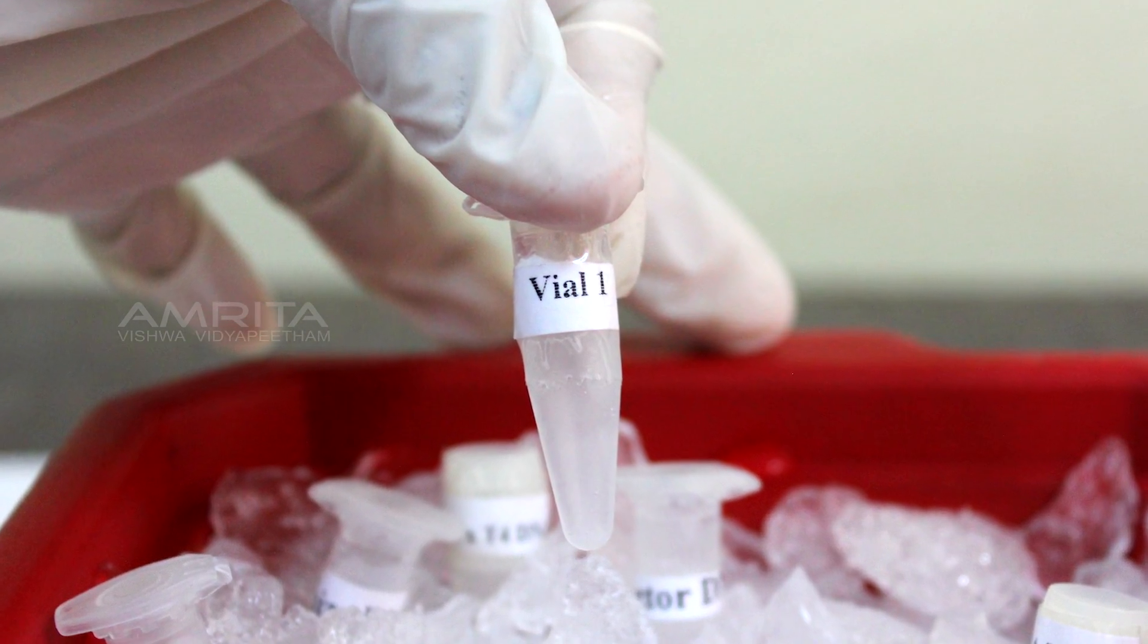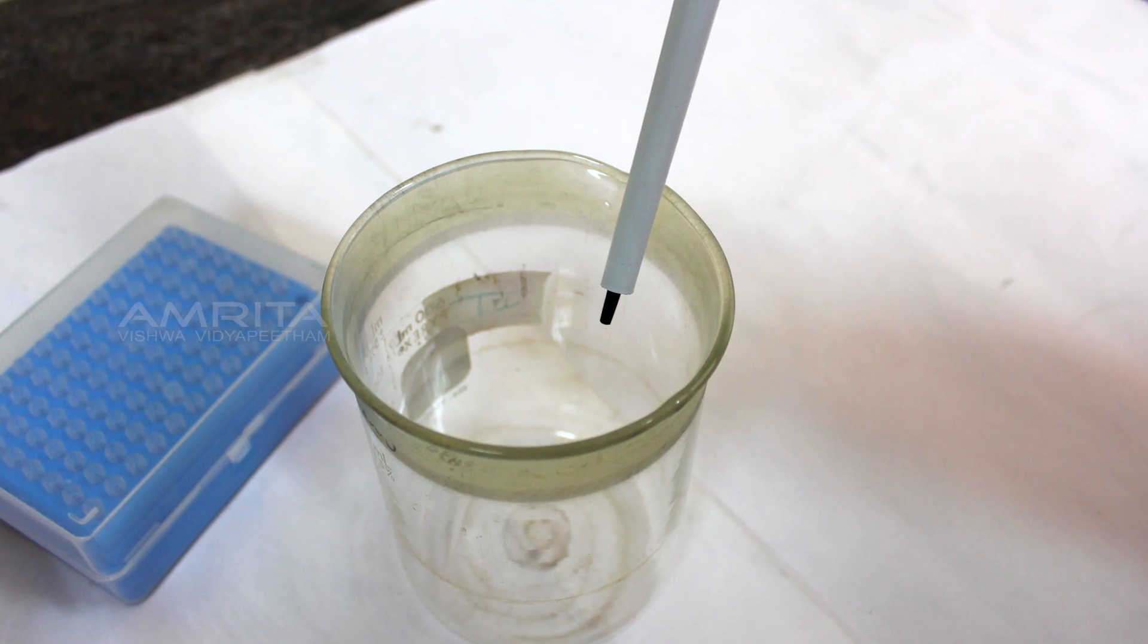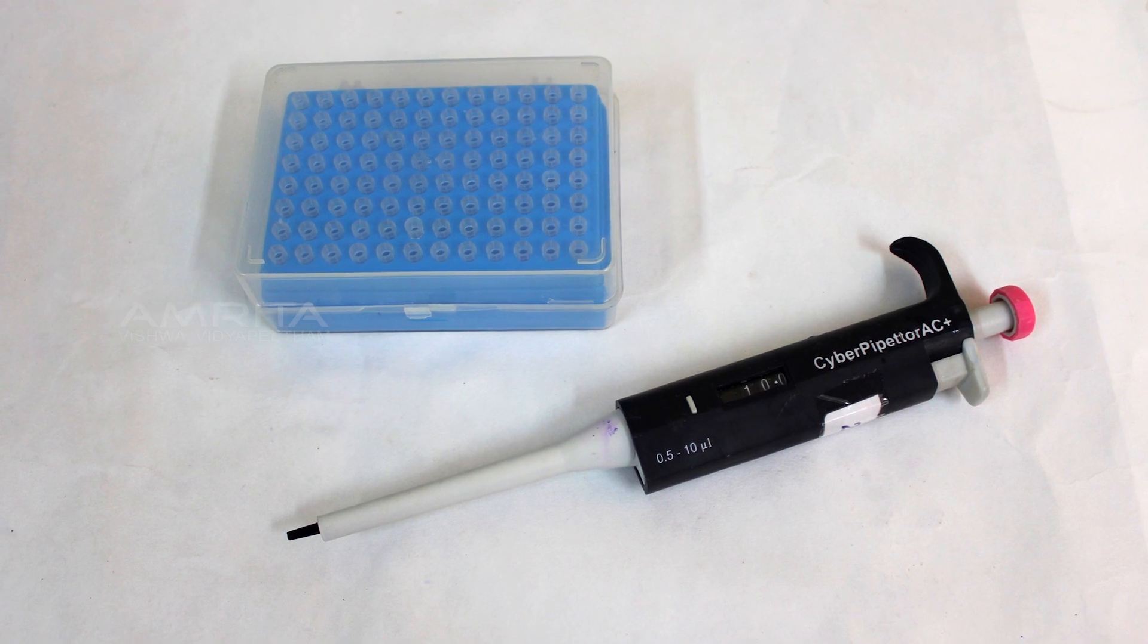empty vial labeled as vial 1, centrifuge, ice box, waste beaker, vial rack, pipette and tip box.